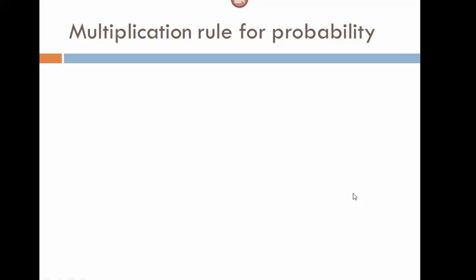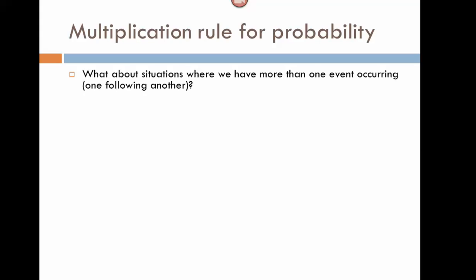Now we're going to add to our tool belt the multiplication rule for probability. This rule comes into play where we have one event followed by another — we're doing one thing, and then repeating that with another action, another probability trial or experiment.